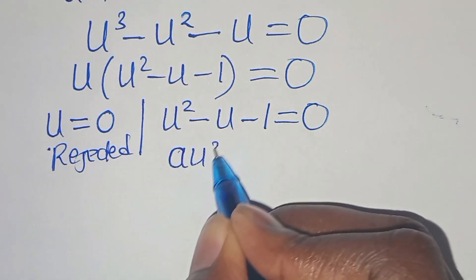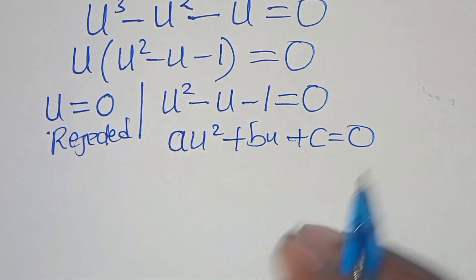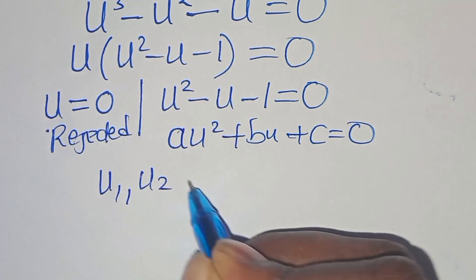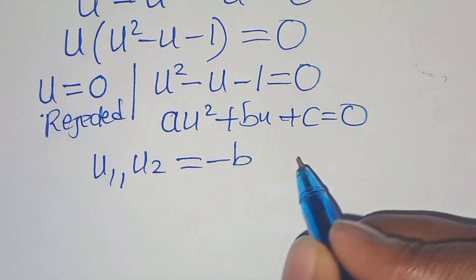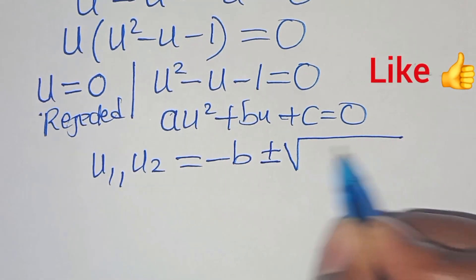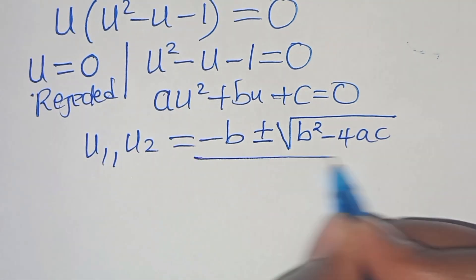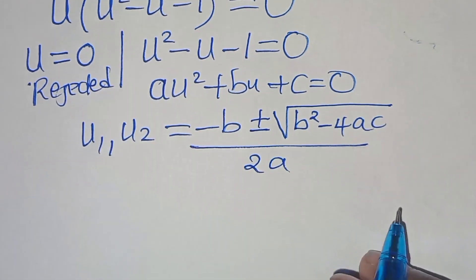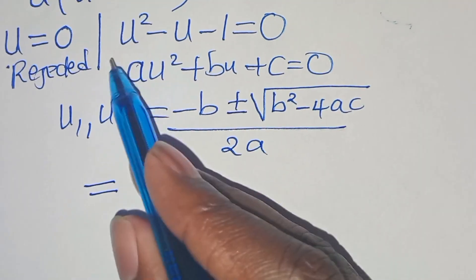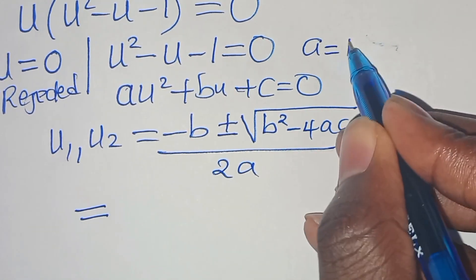This is a quadratic equation of the form au² + bu + c = 0, so we can solve for u₁ and u₂ by applying the quadratic formula, which is: minus b plus or minus the square root of b squared minus 4ac, all divided by 2 times a. From this quadratic equation we have a = 1.